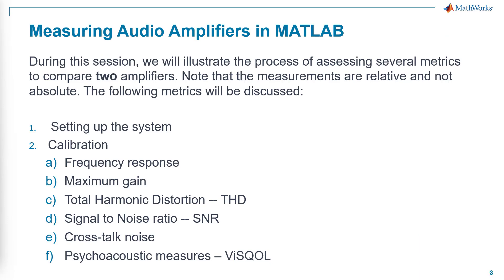During this session, we will illustrate the process of assessing several metrics to compare two amplifiers. Note that the measurements are relative and not absolute, meaning that, for example, if you see a dip in the frequency response, it might be caused by the room effect, but you will see the same dip when you measure the second amplifier. So since we are comparing just between the two amplifiers, it might be okay. Today we will first talk about how to set up the system, followed by a discussion of calibration, and after the calibration we will do the measurements. This agenda will be recorded over three different sections, and this is the first video.